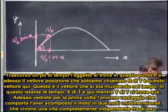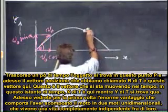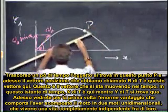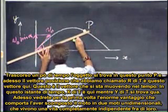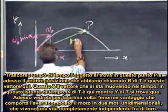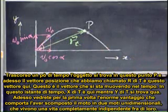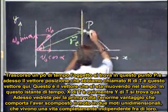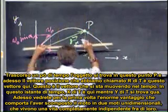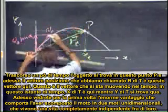A little later in time, that object is at point P, and this is the position vector which we call r of t. That's the vector moving through space. At this moment in time, x of t is the horizontal coordinate, and y of t is the vertical coordinate.